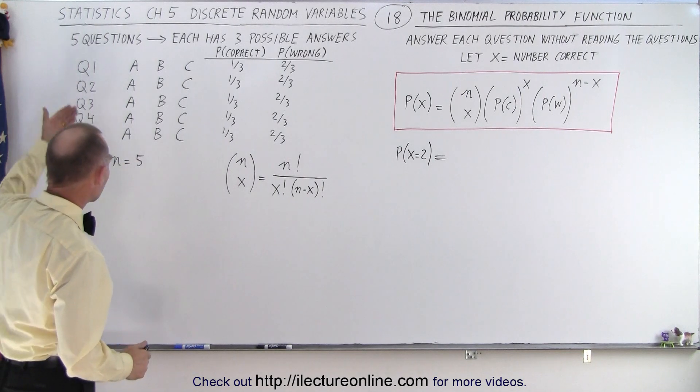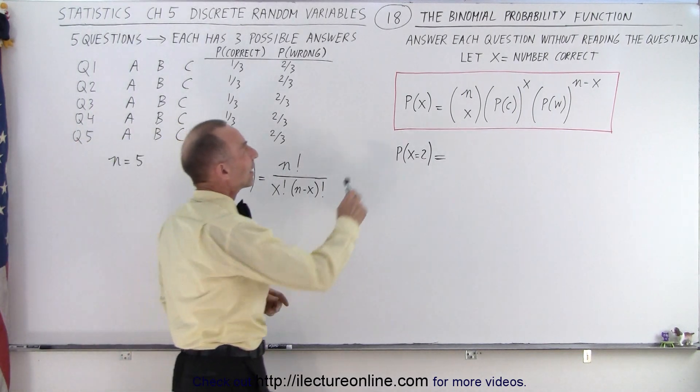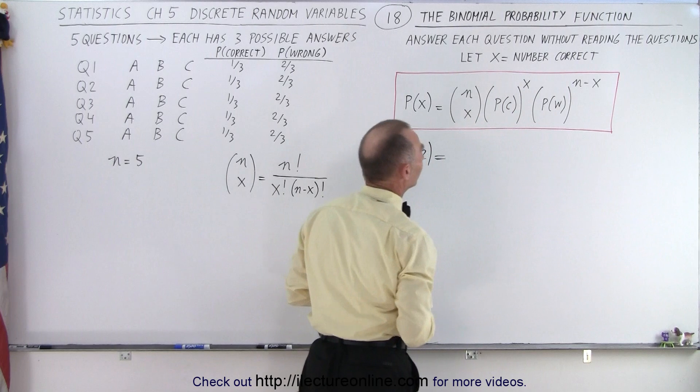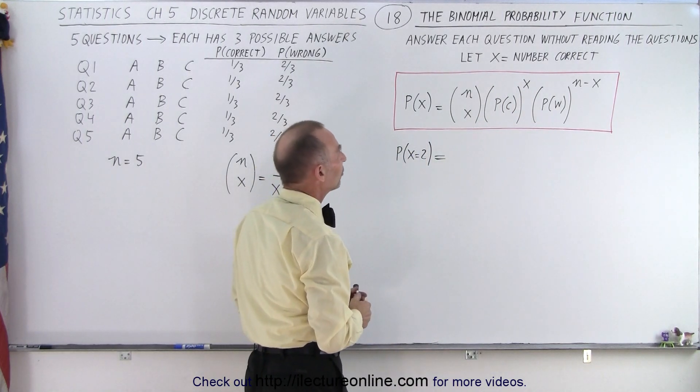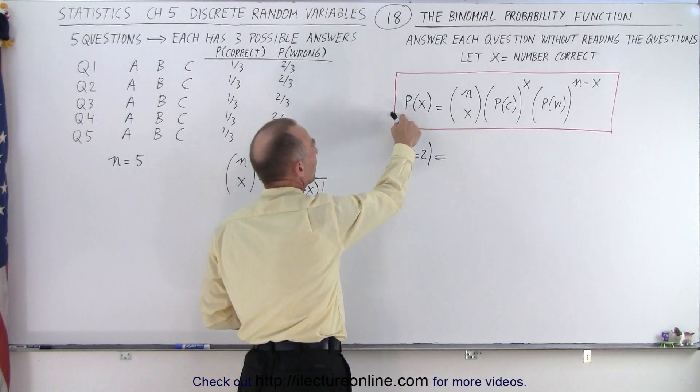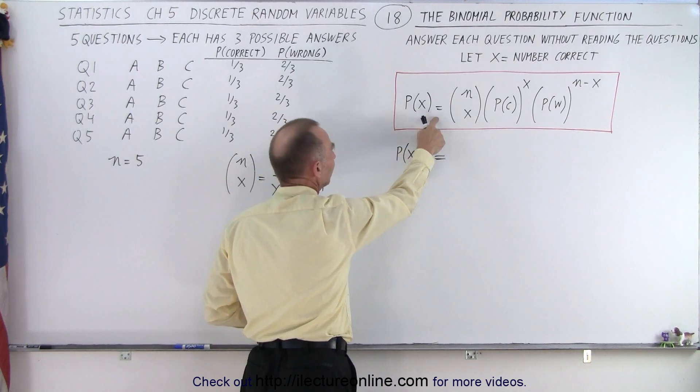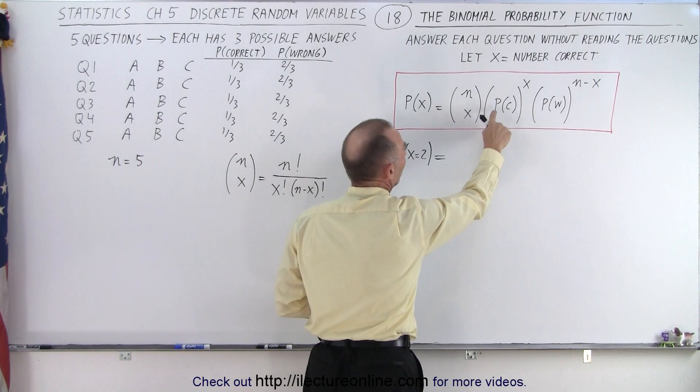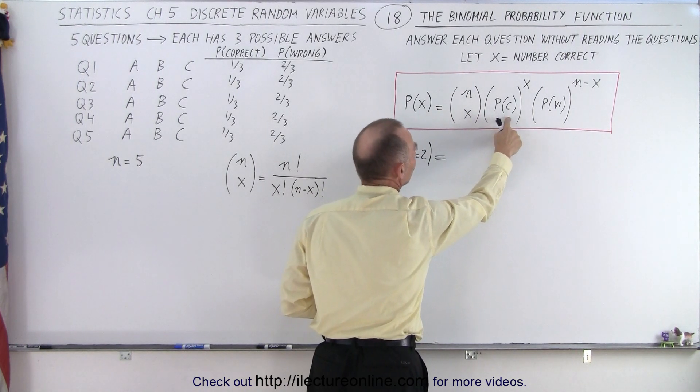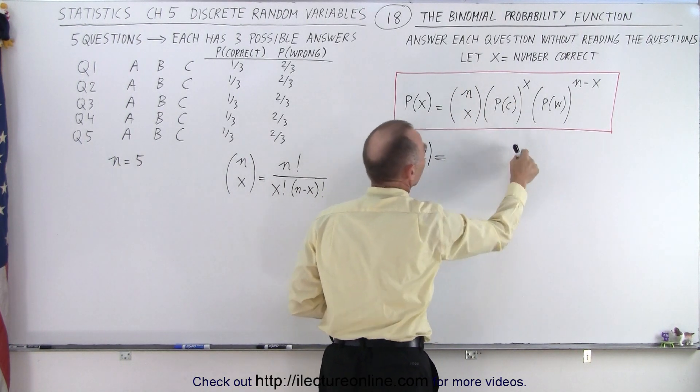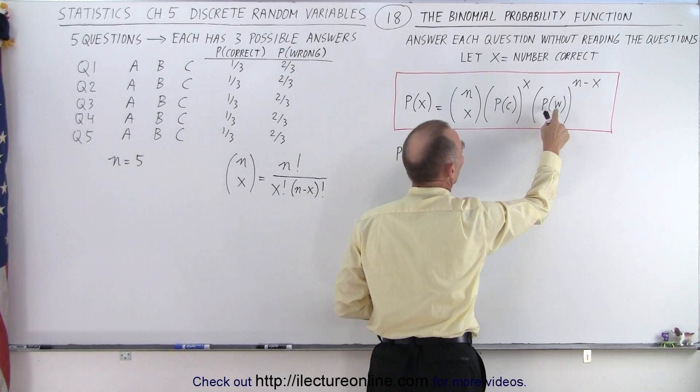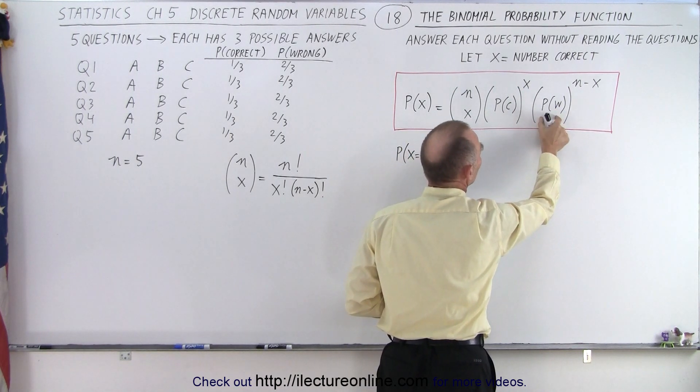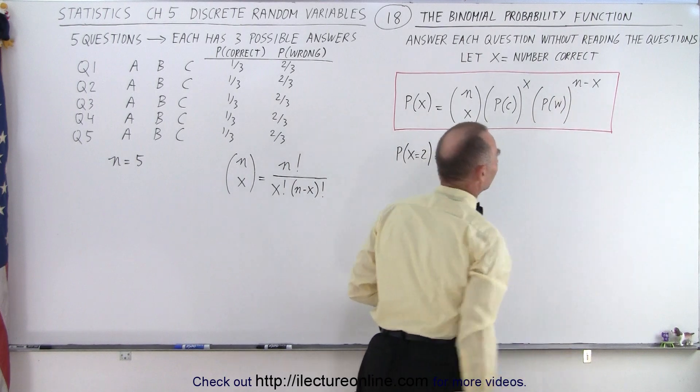Notice, n equals five because there's five questions. We're going to let x equal the number correct, the number of correct answers in our quiz. And here's the equation: the probability of getting x correct is equal to (n choose x), the probability to get one correct in each question to the x power, and the probability to get one wrong in the question raised to the n minus x.